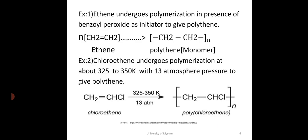For example, ethene undergoes polymerization in presence of benzoyl peroxide as initiator to give polythene. Second example: chloroethene undergoes polymerization at about 325 to 350 Kelvin with 13 atmosphere pressure to give polythene.